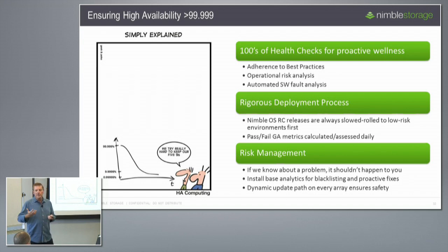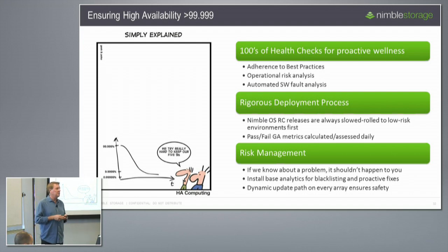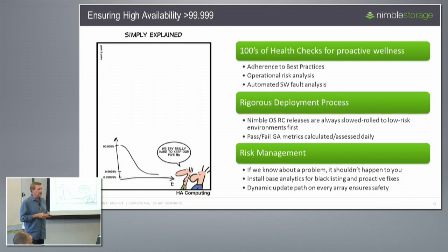Essentially what that amounts to is that every array in the world's upgrade path — from a particular release to another release — is entirely controlled by us on the back end. So everyone has a custom upgrade path, all controlled by our settings on the back end.